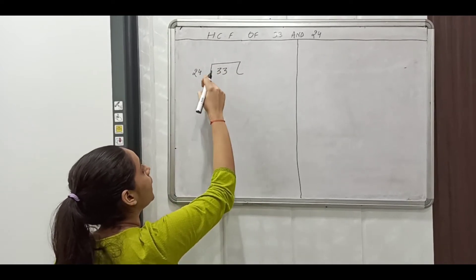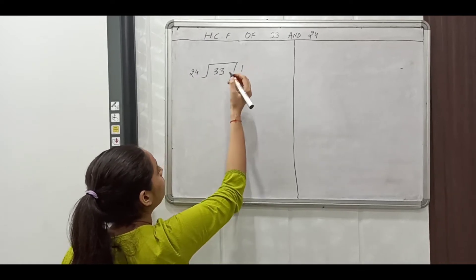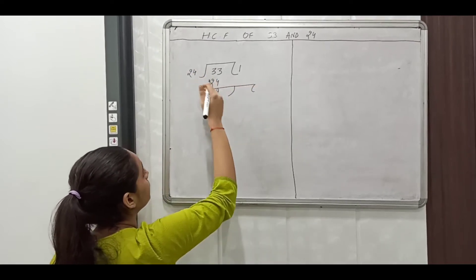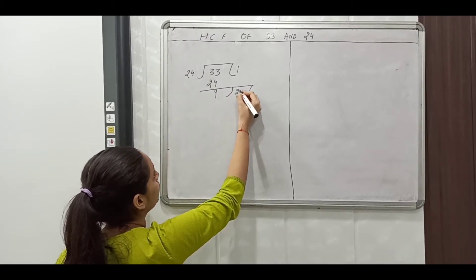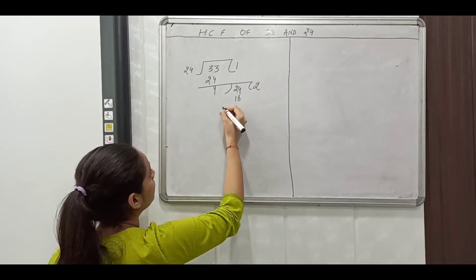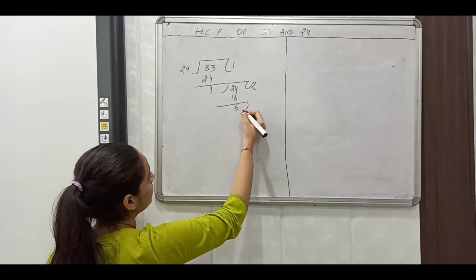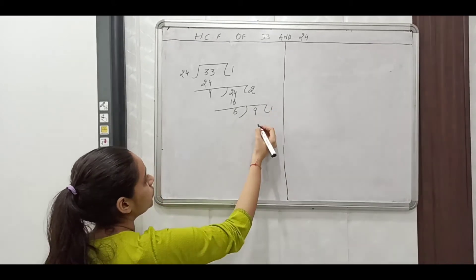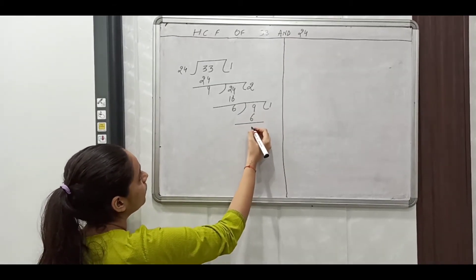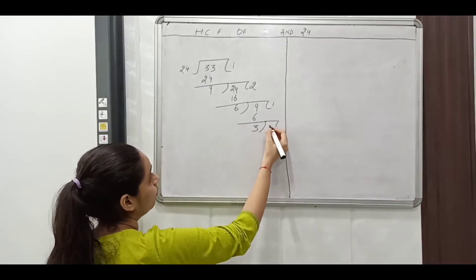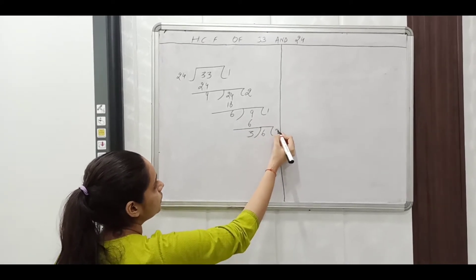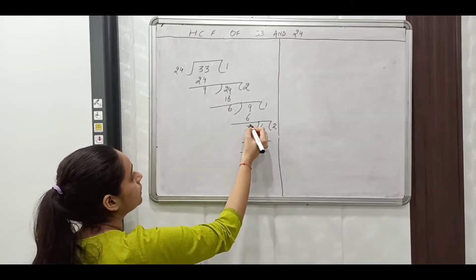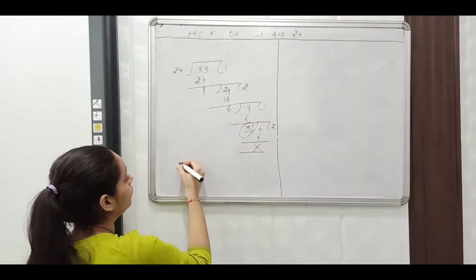Here 33 is the dividend and 24 is the divisor. The quotient is 1 and the remainder becomes 9. In step two, the dividend becomes 24 and the quotient comes out to be 2. Here the remainder becomes 6 and the dividend becomes 9. The quotient comes to 1 and the remainder comes out to be 3. Now 6 becomes the dividend and the quotient becomes 2, where the remainder comes out to be 0. So what we get is HCF of two numbers 33 and 24 is 3.